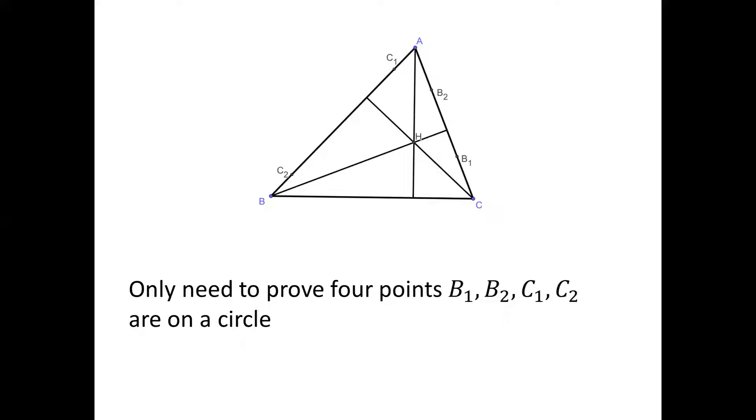For simplicity, we only need to prove four points B1, B2, C1, and C2 are cyclic. Proof for including the other two points A1 and A2 can be done similarly.